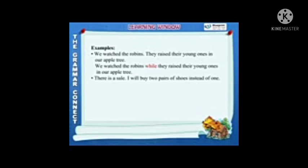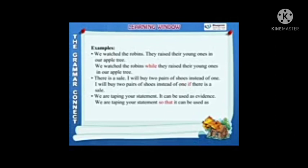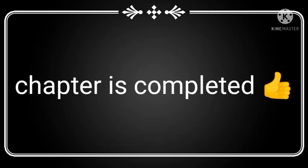By using an adverb clause, we can combine two simple sentences by changing one into an adverb clause of time, place, reason, condition, purpose, result, comparison, or contrast, using subordinate conjunctions like 'although,' 'if,' 'so that,' 'for,' 'while.' Example: 'We watched the robins. They raised their young ones in our apple tree.' Combined: 'We watched the robins while they raised their young ones in our apple tree.' Another: 'There is a sale. I will buy two pairs of shoes instead of one.' Combined: 'I will buy two pairs of shoes instead of one if there is a sale.' And: 'We are taping your statement. It can be used as evidence.' Combined: 'We are taping your statement so that it can be used as evidence.'